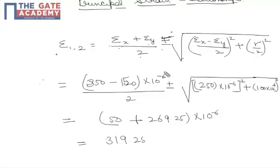The relation is epsilon x plus epsilon y by 2, plus-minus square root of (epsilon x minus epsilon y by 2) squared plus (gamma by 2) squared.